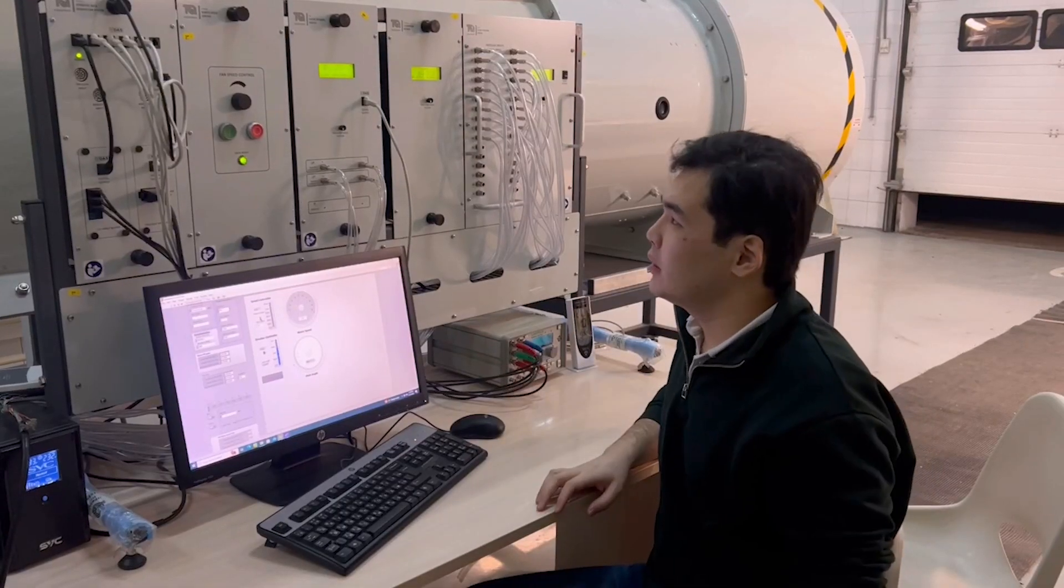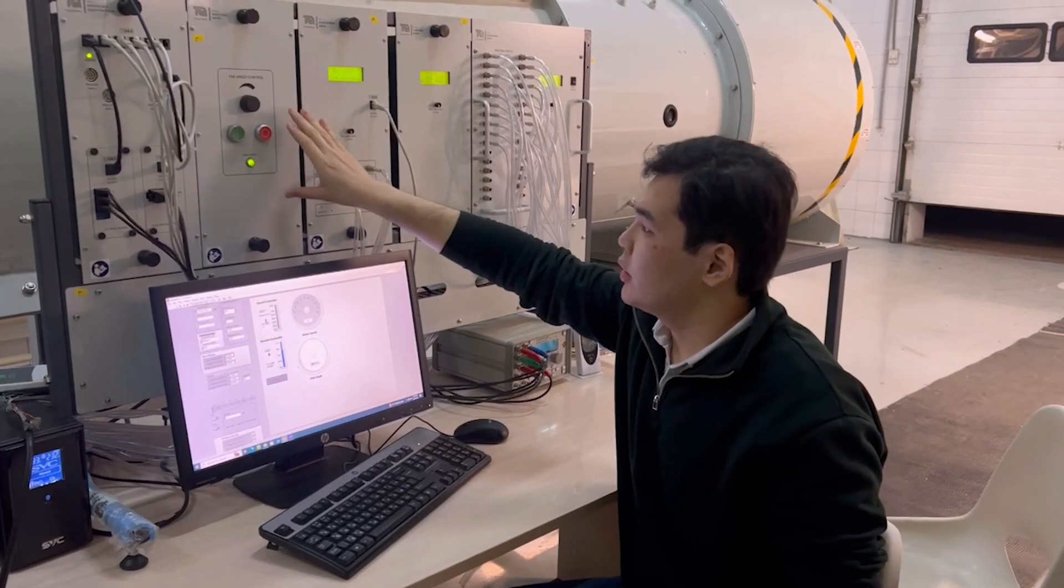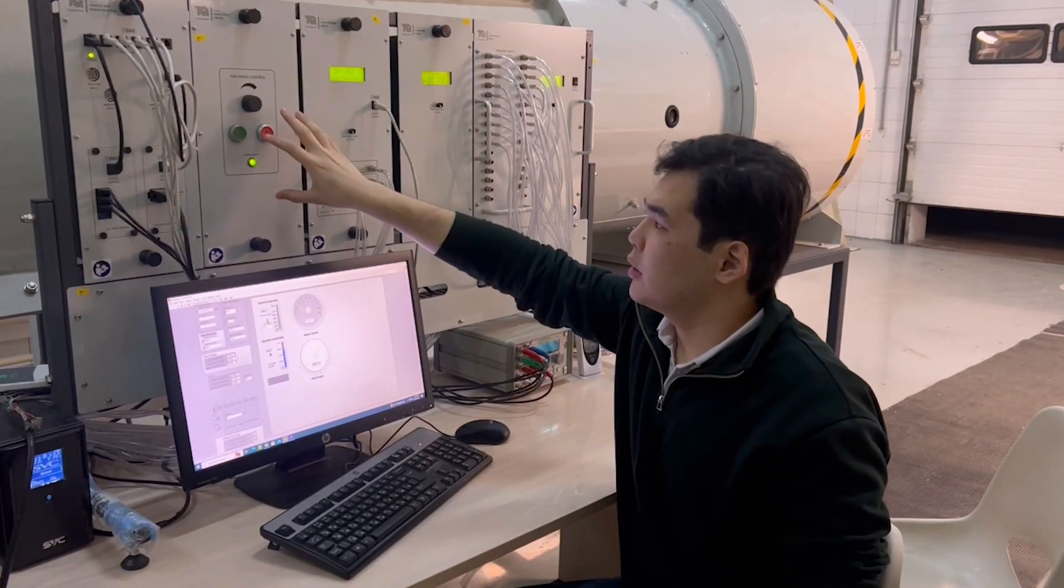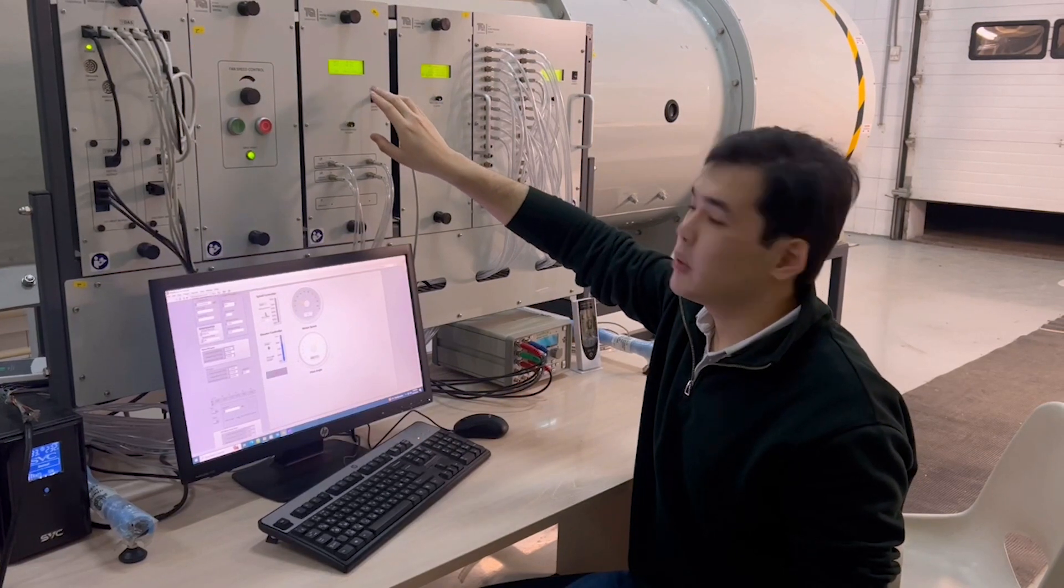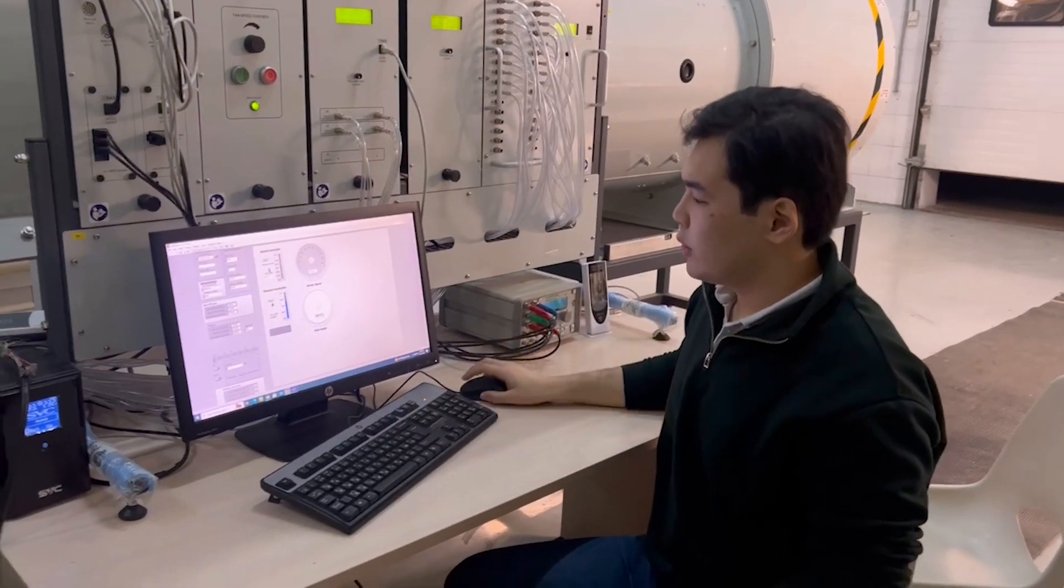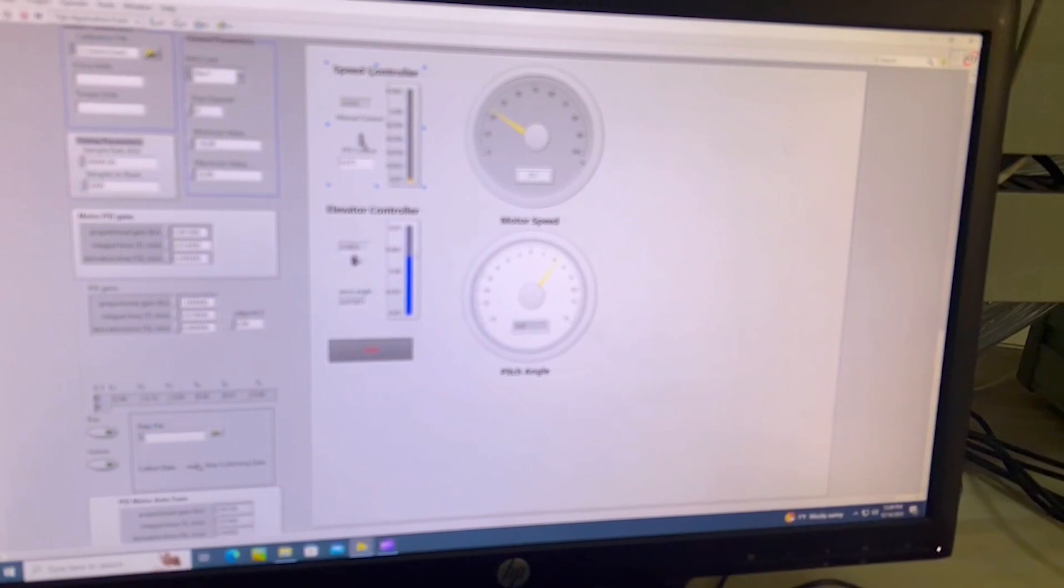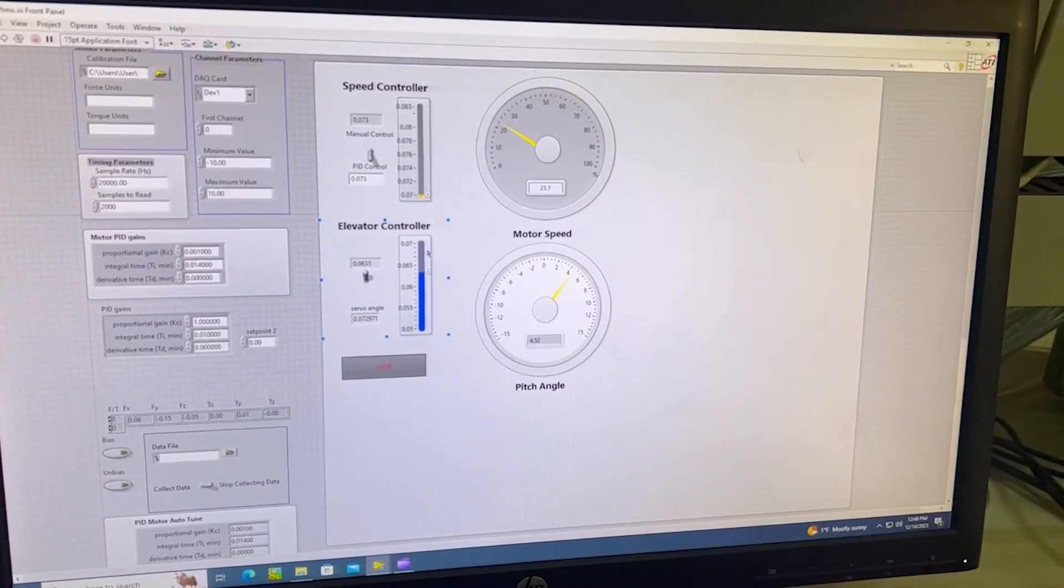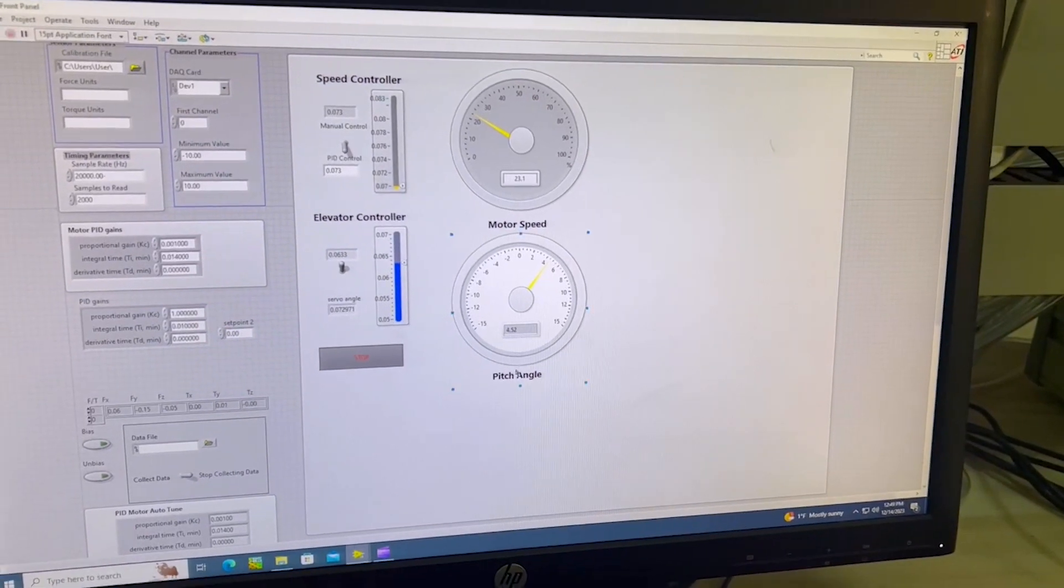Here's our control panel. It's a wind tunnel from tech equipment. We can control the speed of the air from this panel, and the speed can be observed by the pressure difference on this indicator. This is the control panel of the plane. It has a speed control and elevator control, and also two dials which show the motor speed and the pitch angle.